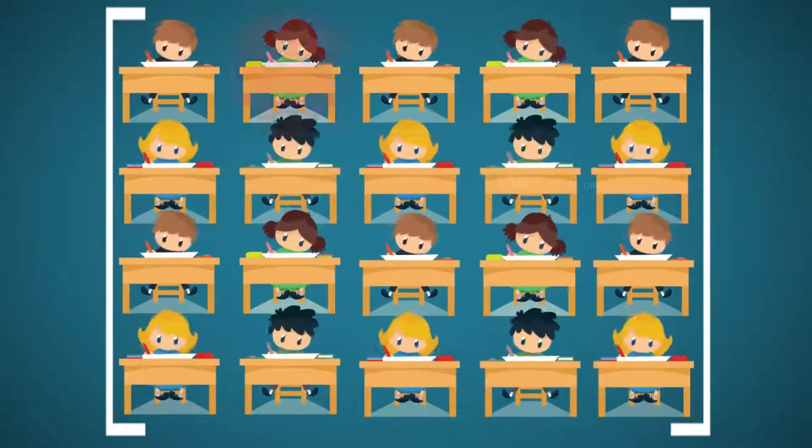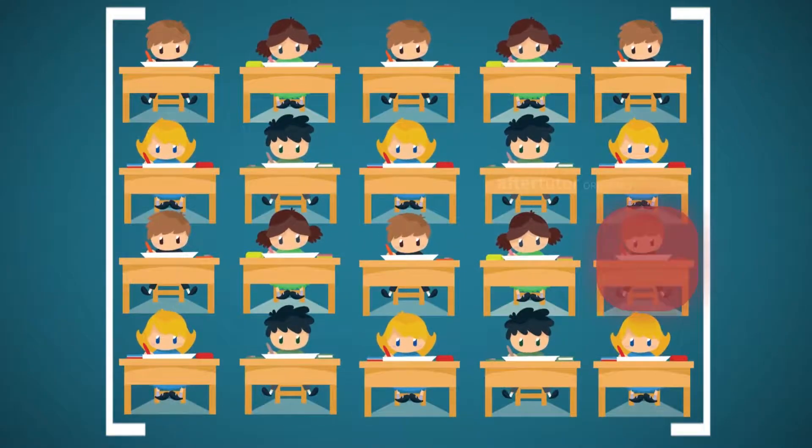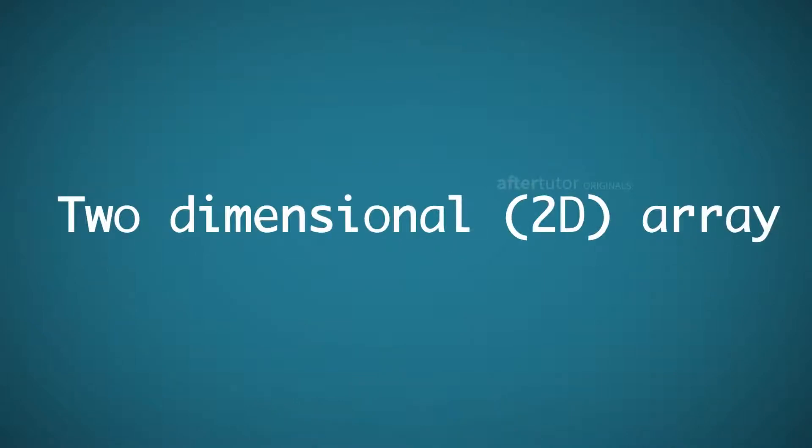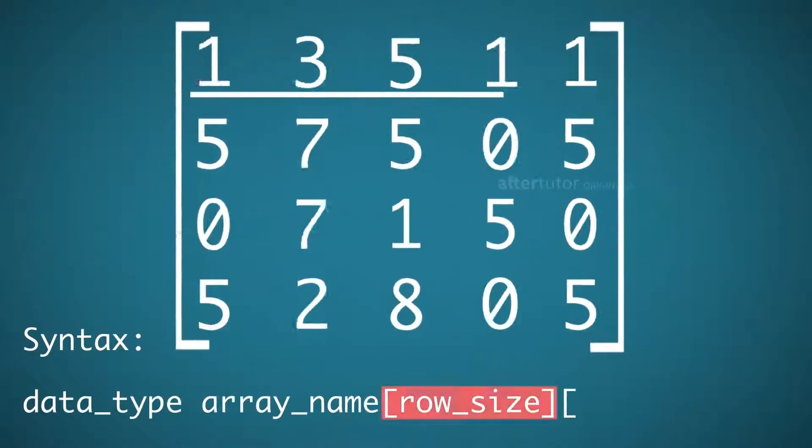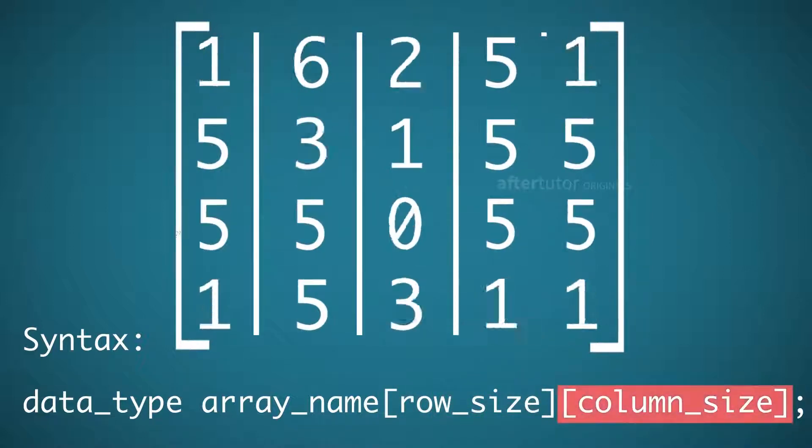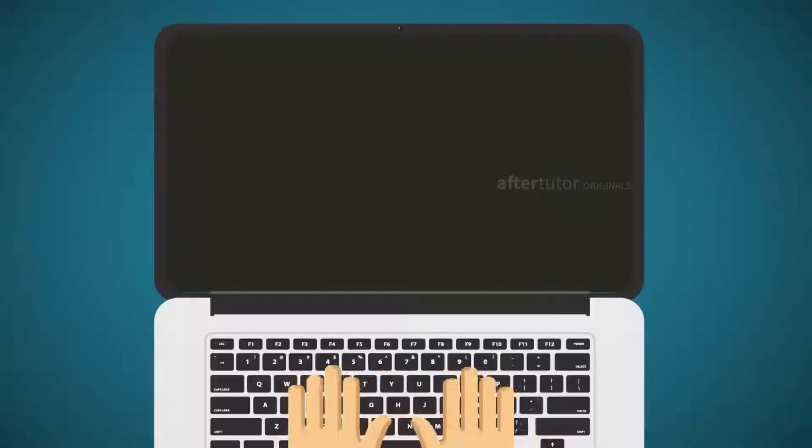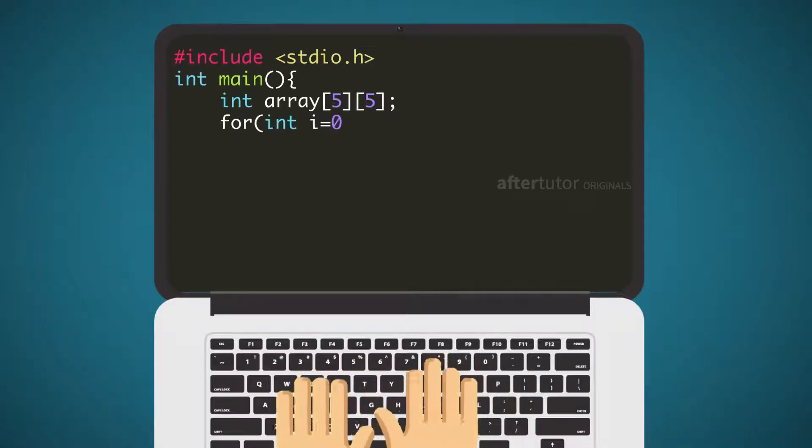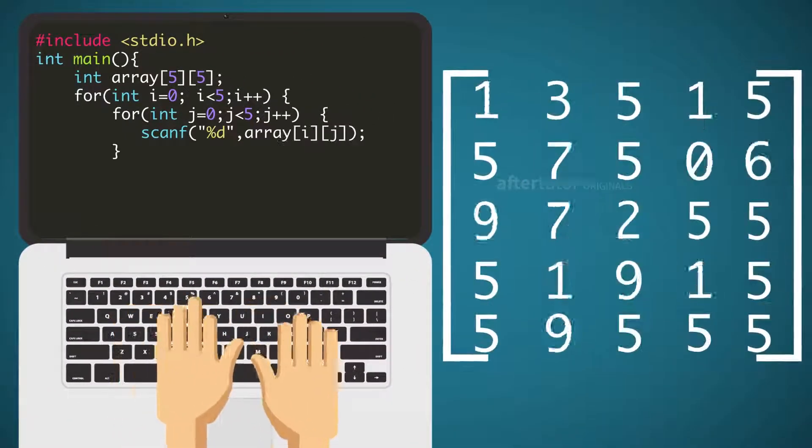For example, to store the student's roll number in their respective ages, we use two-dimensional array, in which first bracket represents number of rows, and the second bracket represents how many elements is available in each row. For example, a simple two-dimensional array program that contains five rows and five columns.